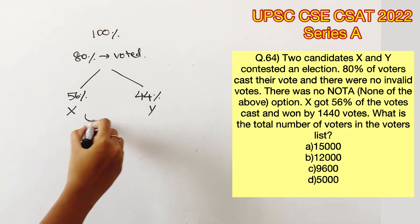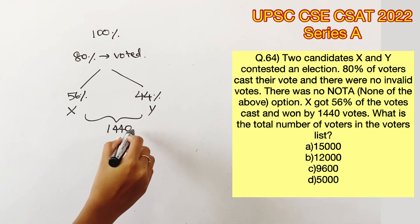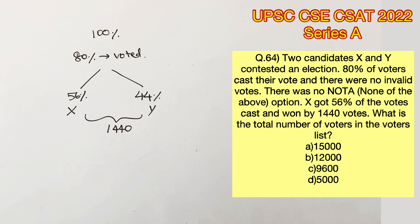X has now won by 1440 votes, which means he got 1440 votes more than Y. In percentages, he has gotten 12% more than Y. So we can equate these both.